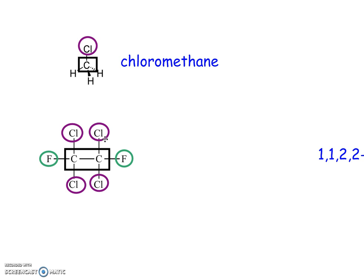So 1, 1, 2, 2, dash to separate the numbers from the letters. The prefix for 4 of something is tetra. So tetra, well there are 4 chlorines, so chloro.